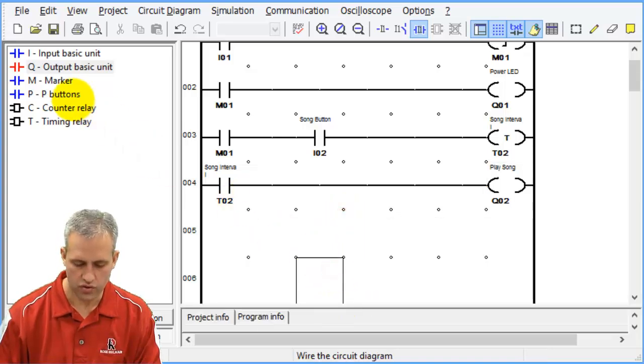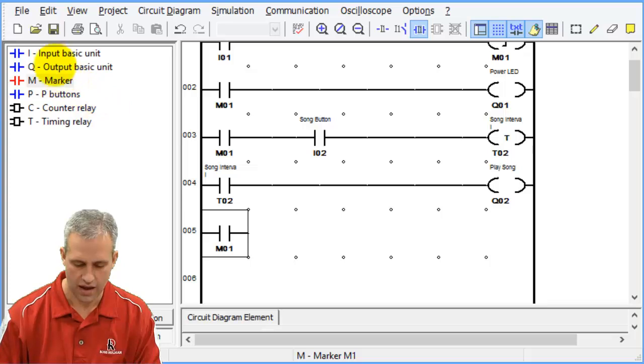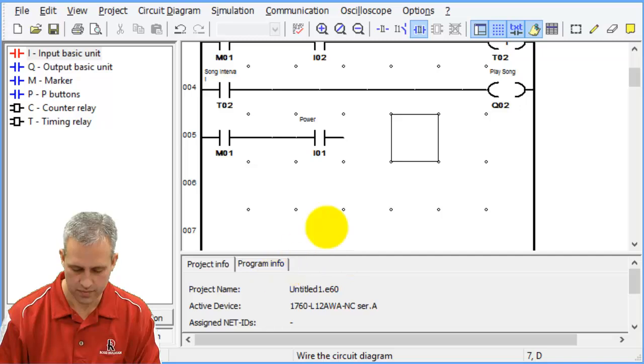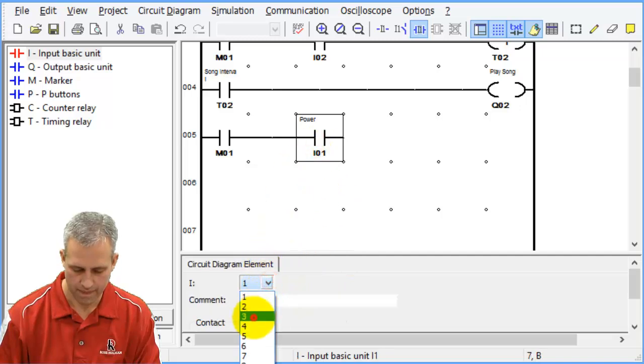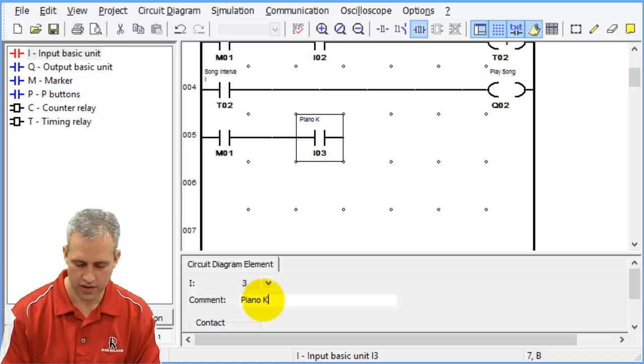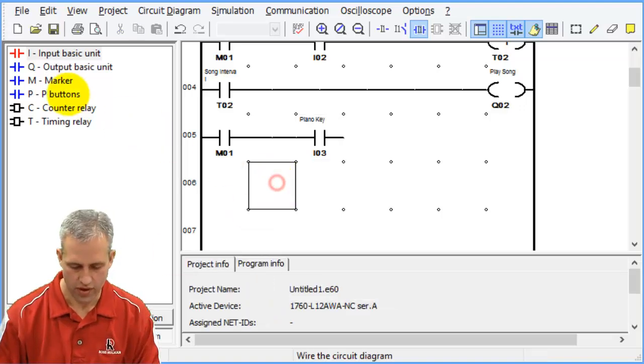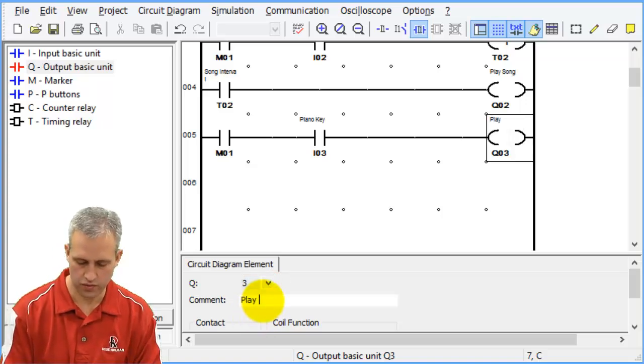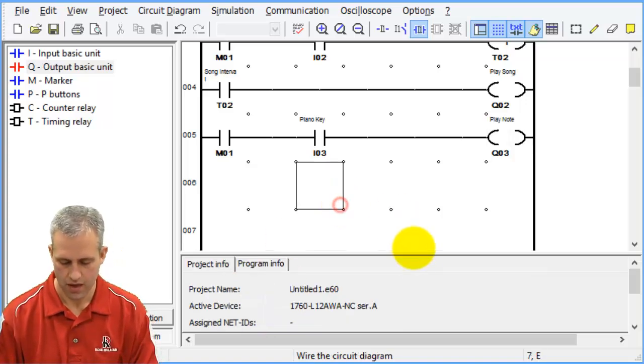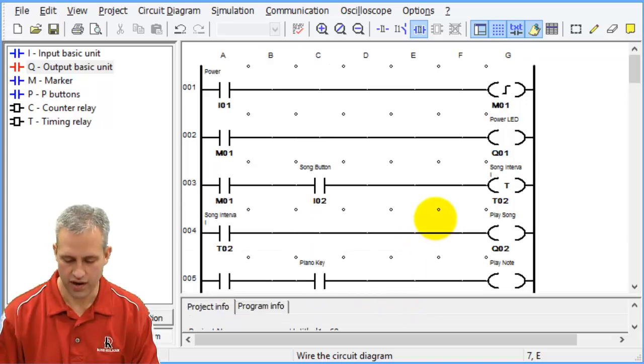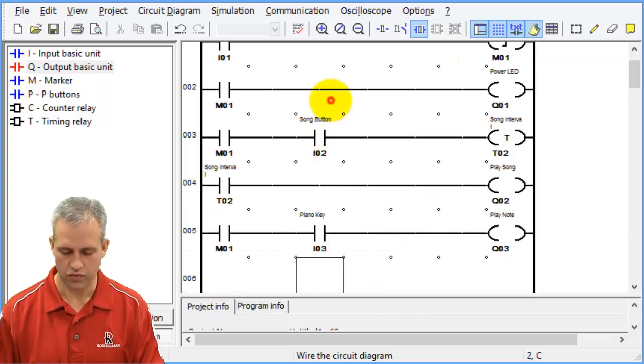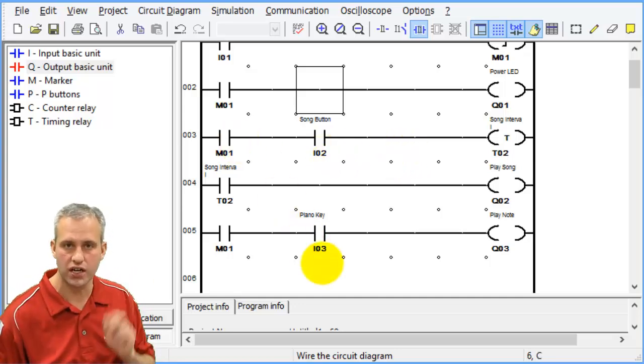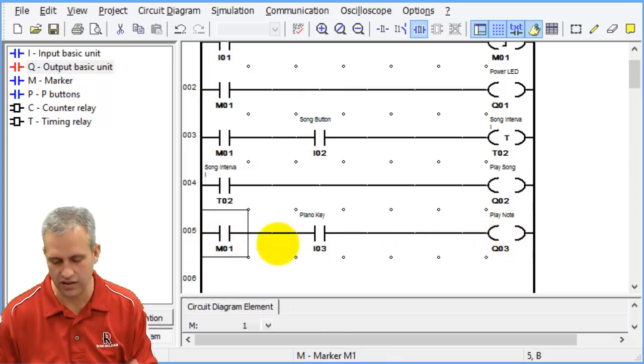And then the last one is quite easy. If I'm in marker one and I have an i3, which is my piano key, then I want to control Q3, which is play note. So you can see it's really not that different. I mean, line rung two is a Moore, and then lines three, four, five involve a Mealy machine where the output is dependent not just on the state but also on some input. Very little distinction.